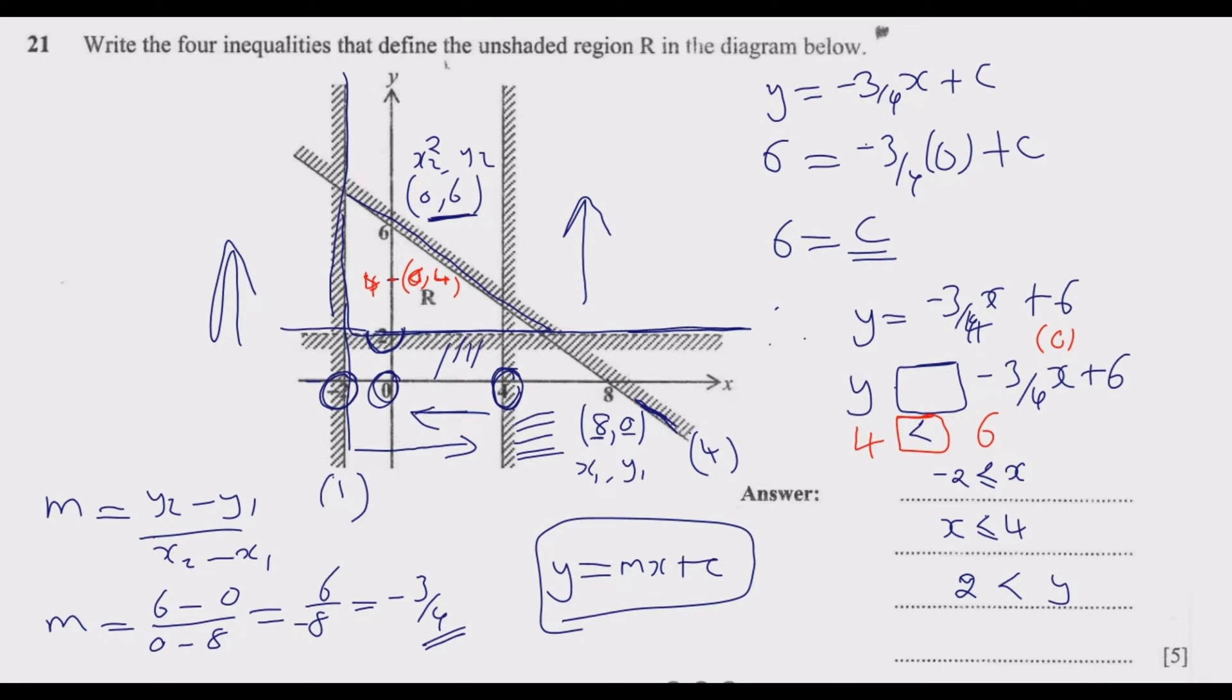Having established that, we need to pick the value within the wanted region to establish whether it's greater or less. Because it's a solid line, we need to include the equal part in the equation. So we are going to have Y is now less or equal to, because of the solid part, then minus 3 over 4 X plus 6. Once you do that, you have gotten the 5 marks.